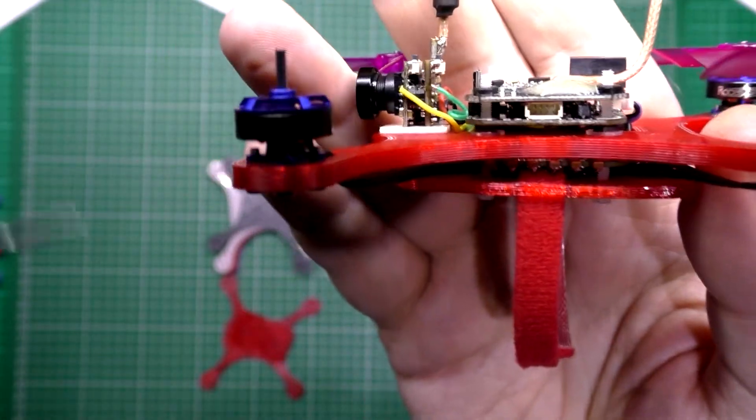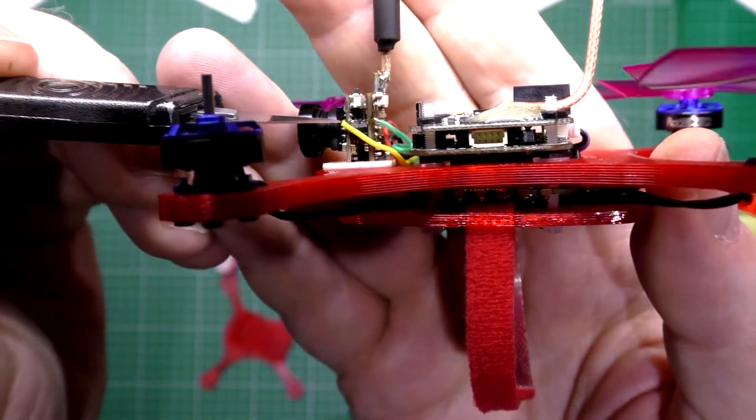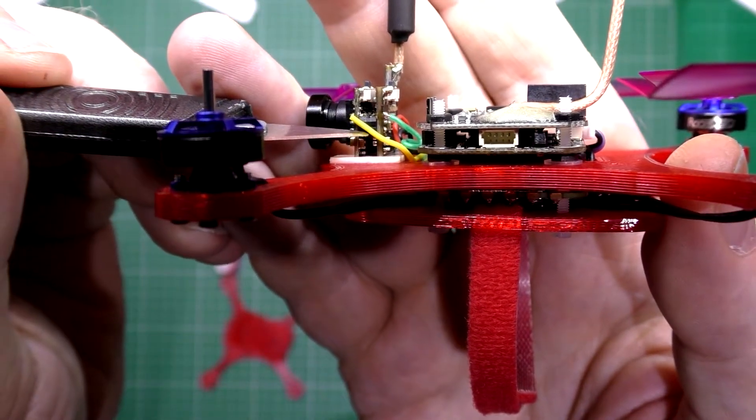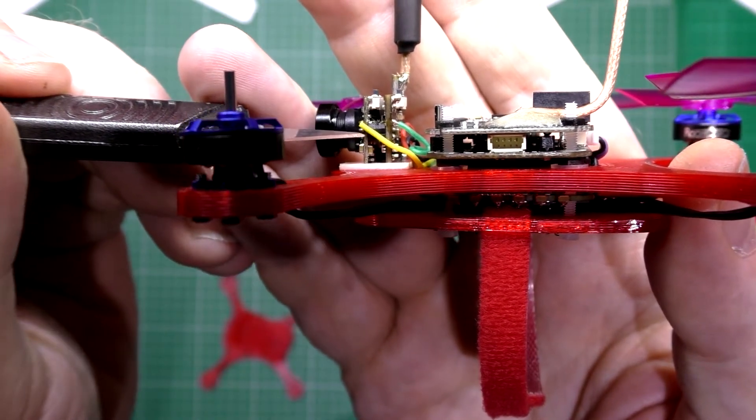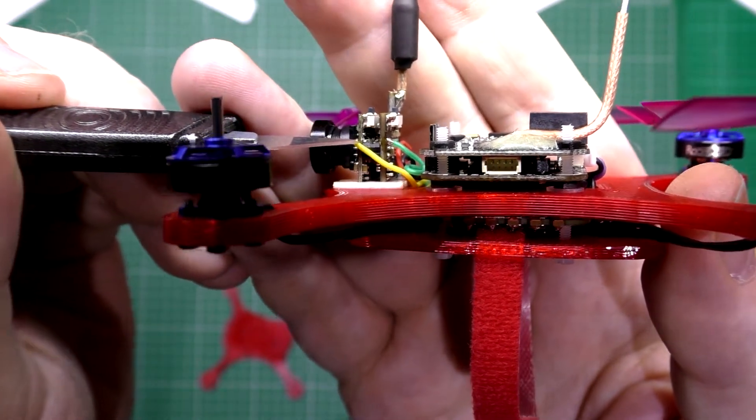The bottom one is negative, the middle one is positive, and the top one is VTX.